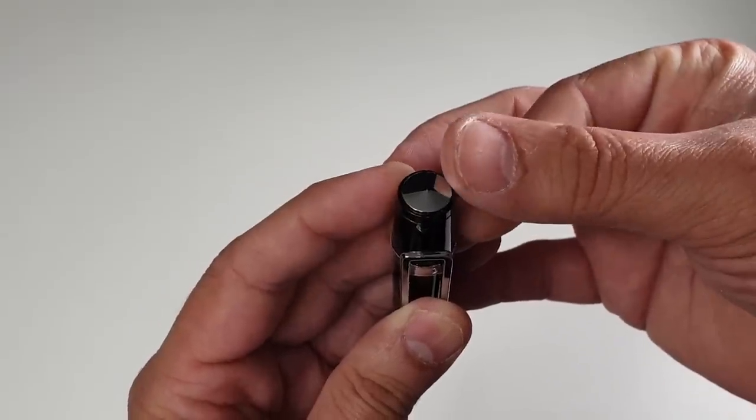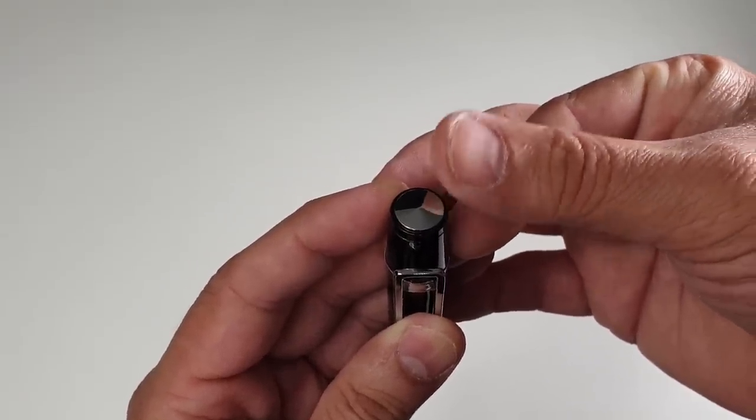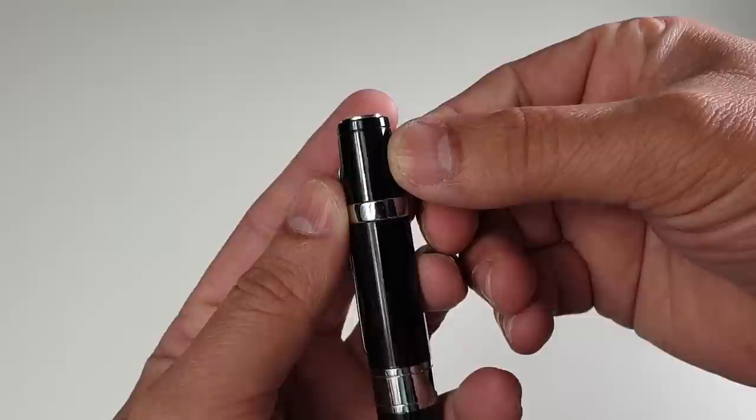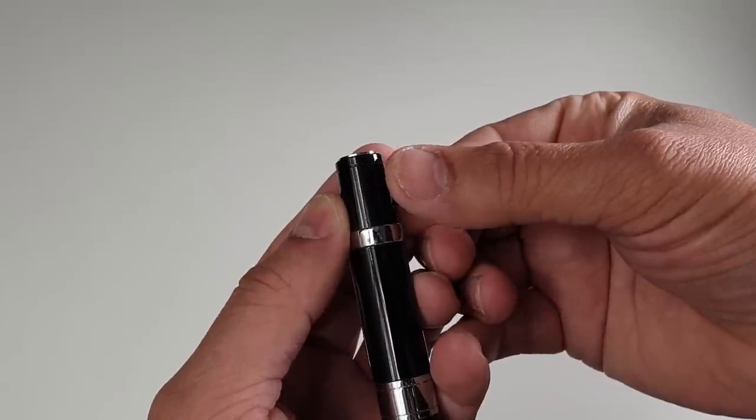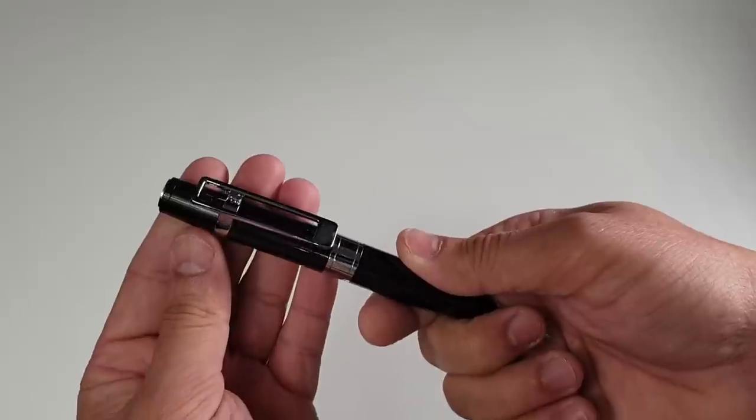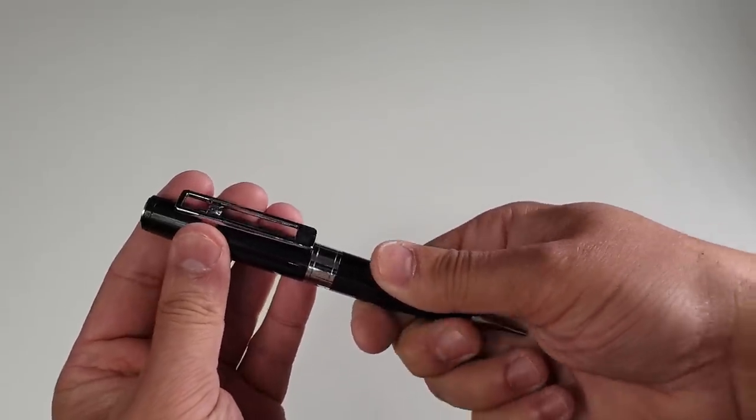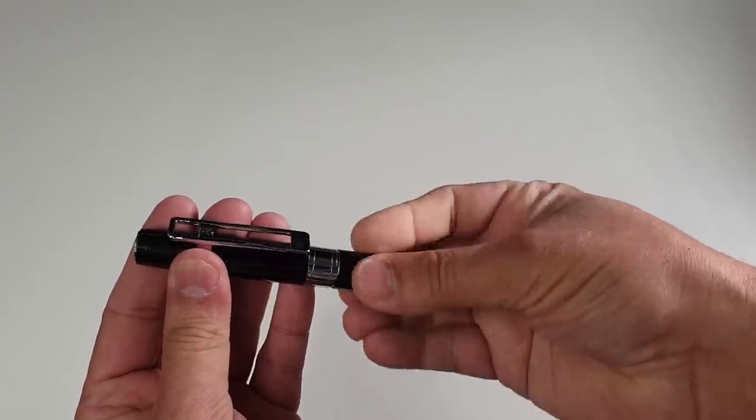On the back of the pen you have a status indicator light which will illuminate blue as well as yellow. Changing the refill and connecting this camera with your computer is very easy and straightforward, just simply undo that.